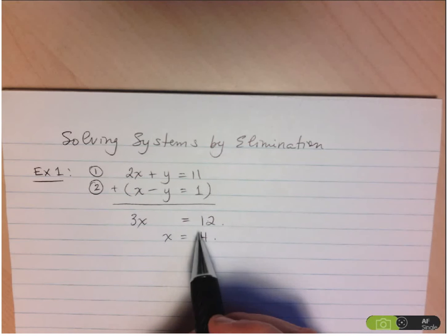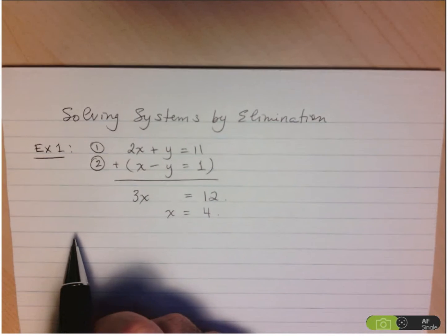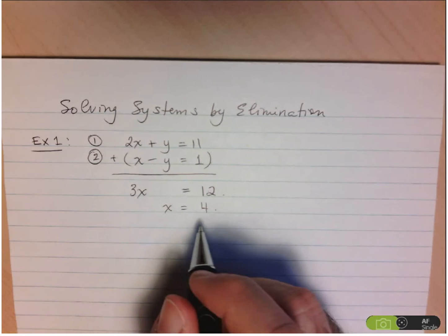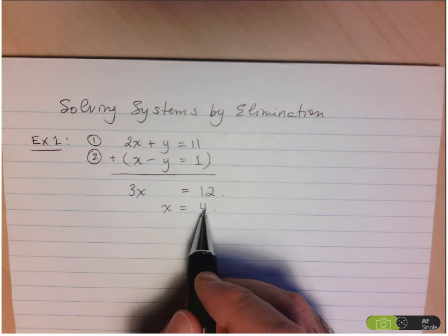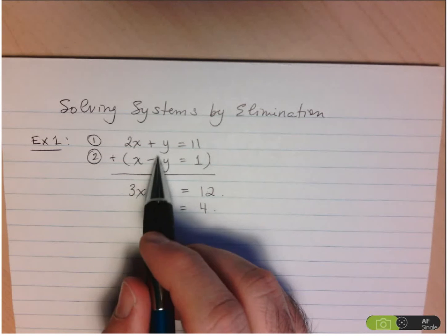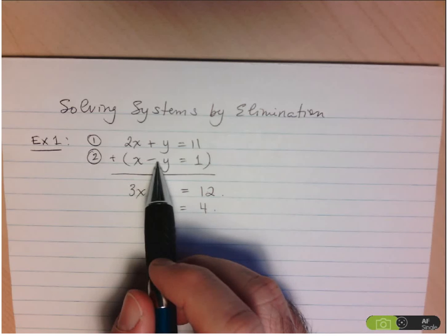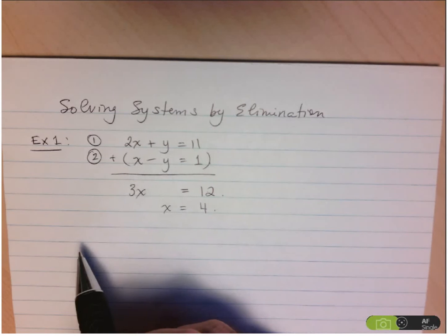Of course, there are two variables I need to solve for, so I need the y value as well. Here we're going to do exactly what we did with substitution. Now that I know x, I can substitute that back into one of the equations. I can pick either one, since we're looking for a point of intersection — the x's and y's are the same in both equations.